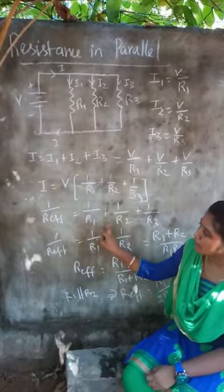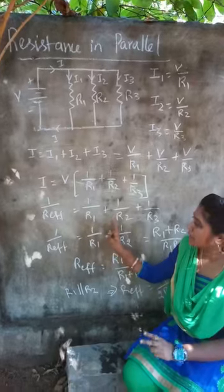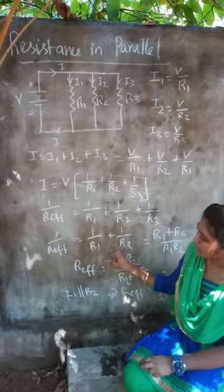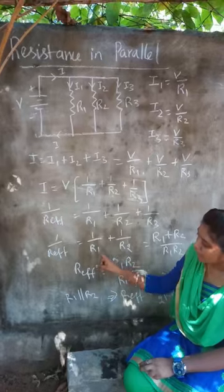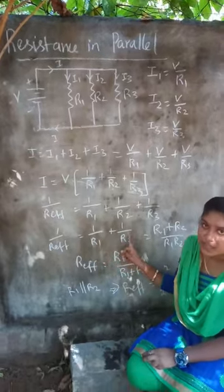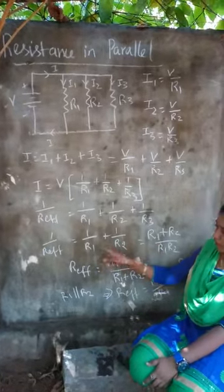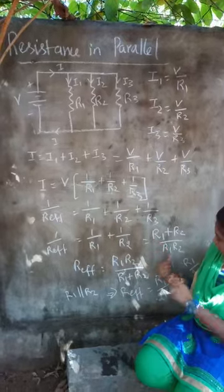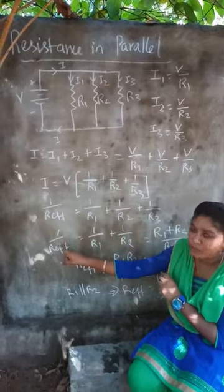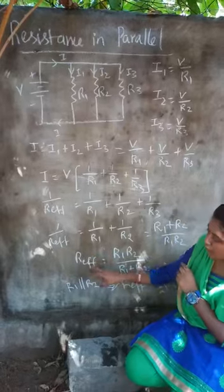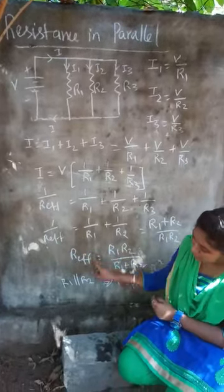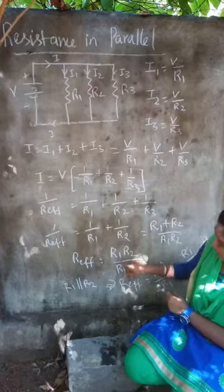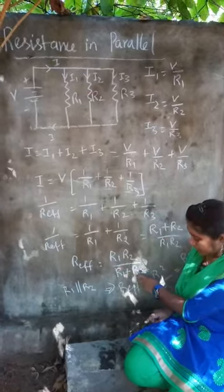Now let us consider two resistances in parallel — R1 and R2 alone. For two resistances in parallel, we take the LCM of 1/R1 + 1/R2, which gives (R1 + R2)/(R1 × R2). So 1/R_effective = (R1 + R2)/(R1 × R2). Taking the reciprocal, R_effective = (R1 × R2)/(R1 + R2).